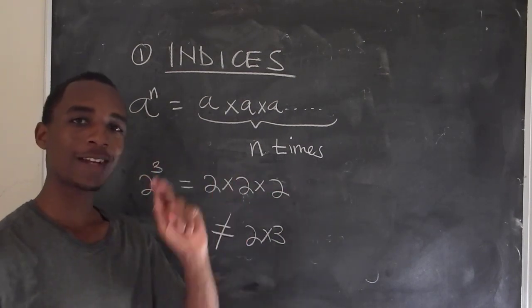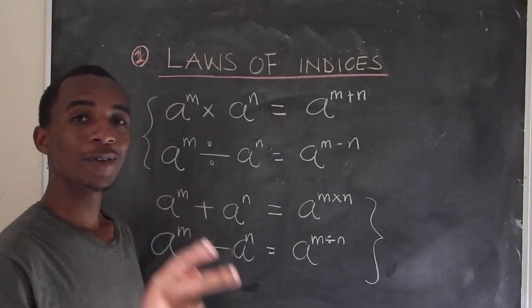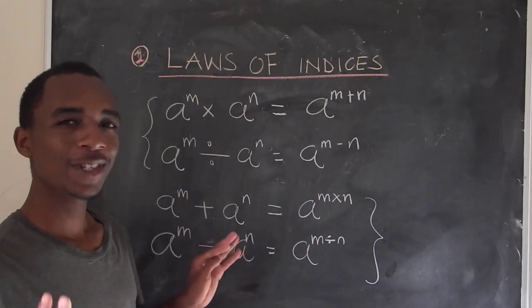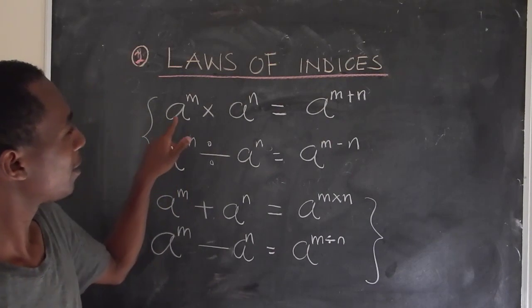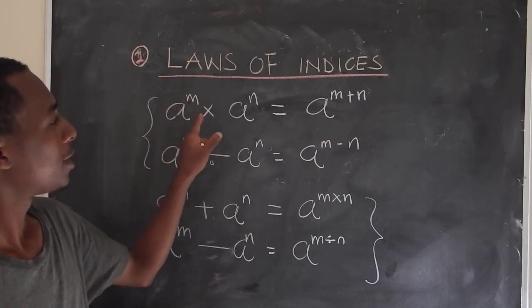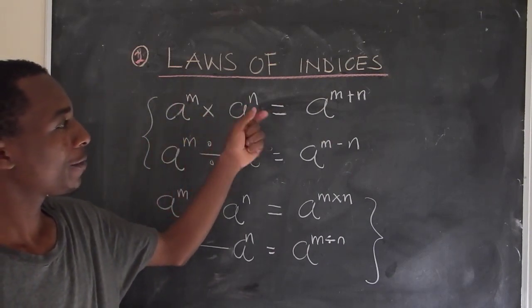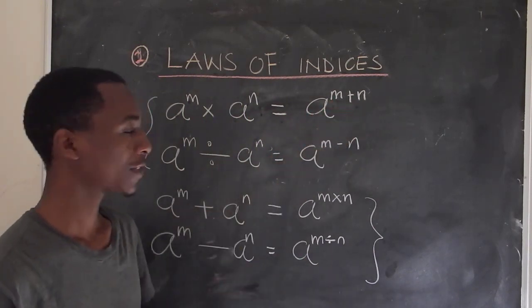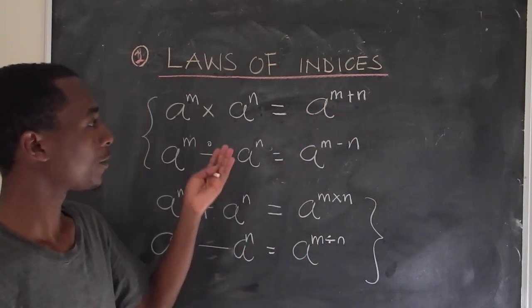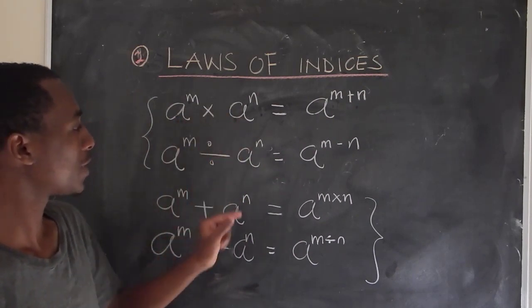Let's move on to the second one. Number 2 is about the laws of indices and this is really something that is very common to engineer mathematicians. So if you have a number a to the power m times a to the power n, we know this is a to the power m plus n. You can try that out with some numbers and see how it works out. The bases must be the same.